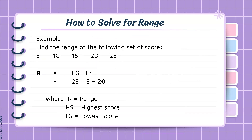Let's find the range of the following set of scores: 5, 10, 15, 20, and 25. To solve for the range, we subtract the lowest score, 5, from the highest score, 25. So we have: range = 25 minus 5 = 20. Our range in this data set is 20.